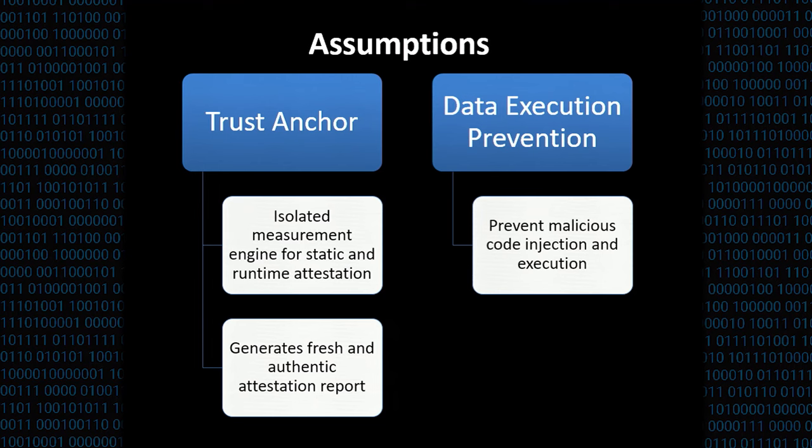C-FLAT is based on two assumptions. First, we assume that a trust anchor is available on the embedded systems. The trust anchor allows us to perform an isolated measurement for static and runtime control flow attestation. And it also allows us to generate a fresh and authentic attestation report. Second, we also assume data execution prevention to prevent the attacker from simply injecting code on the embedded device and executing it from data memory. As I said before, embedded systems already provide protection against these attacks, in particular those embedded systems that feature a memory protection unit.